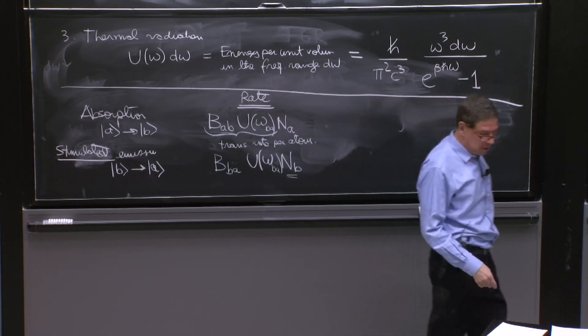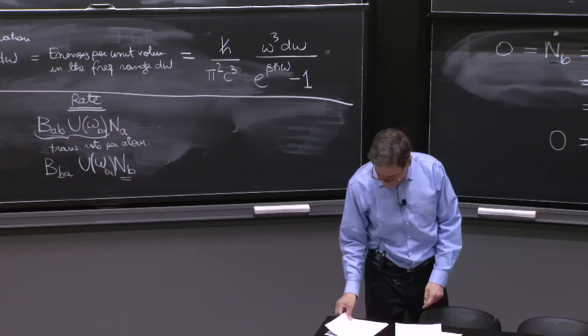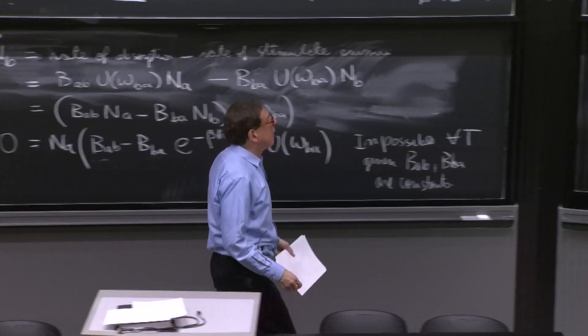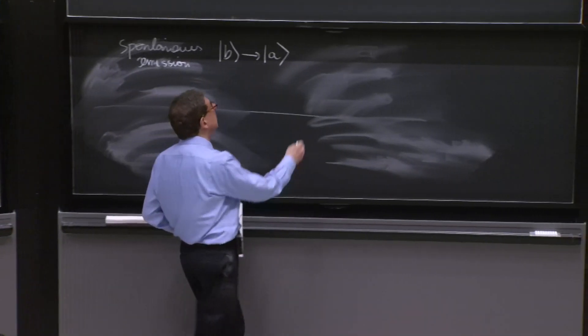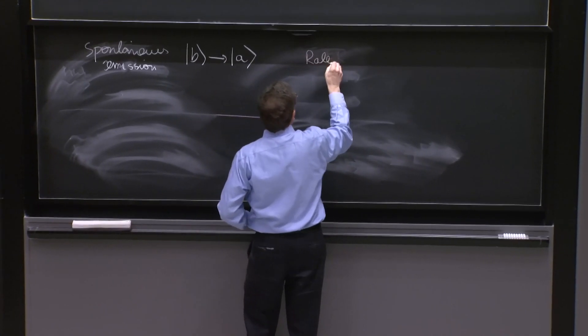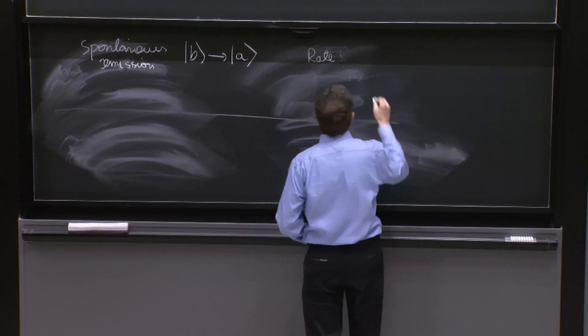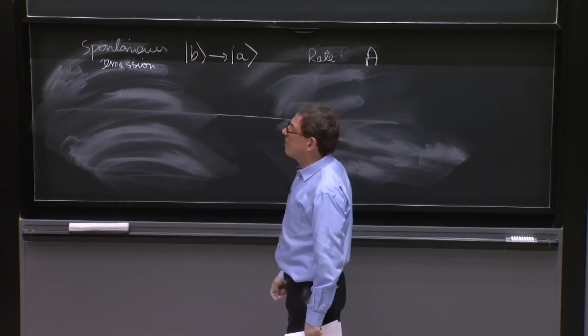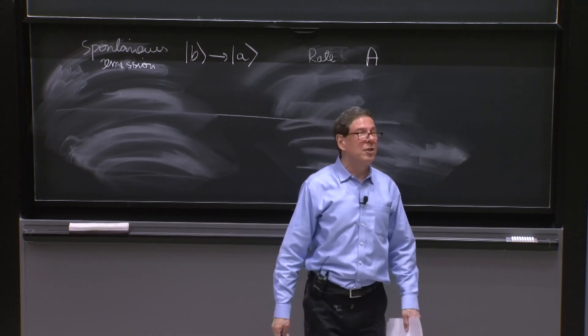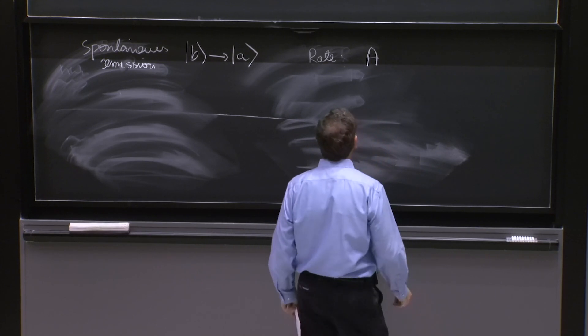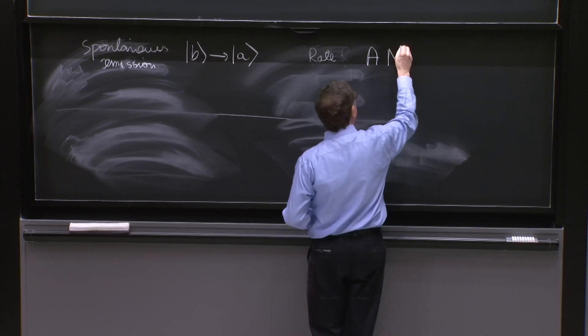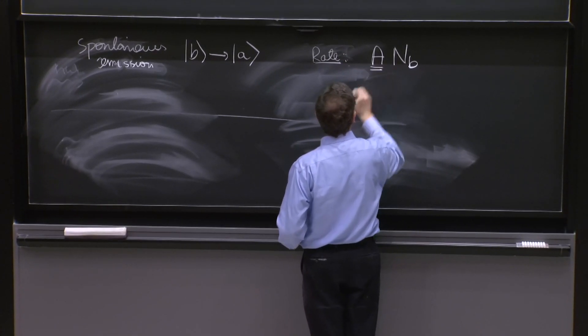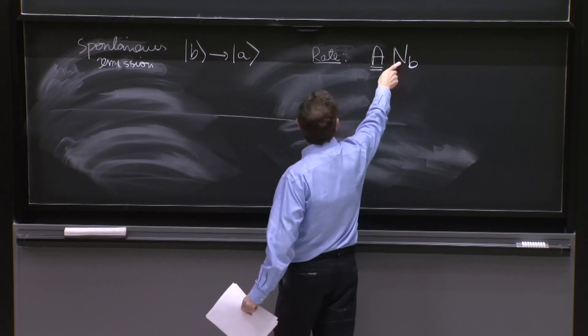So what do we have? A rate which is determined by a coefficient that Einstein called A. A, that's why the name A and B coefficients of Einstein. A times NB. So that's the spontaneous emission rate per atom multiplied by the number of atoms.